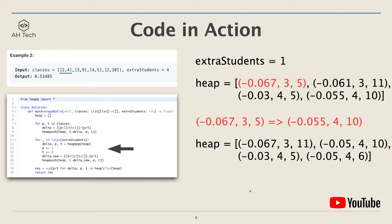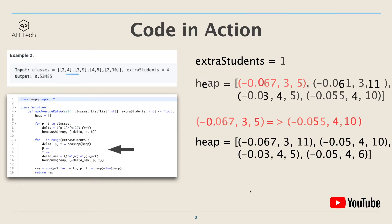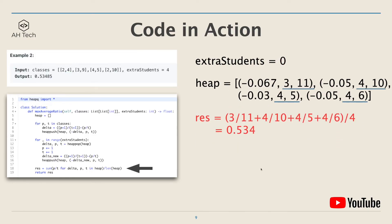Now we don't have any more extra students. The total average pass ratio is the sum of pass divided by total in each tuple in the heap, divided by the size of the heap, which gives 0.534 in this example. This concludes the algorithm.